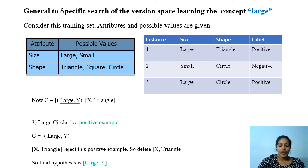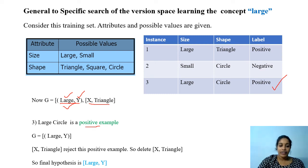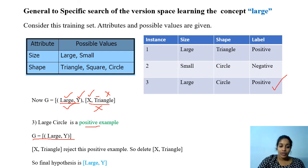Our current hypotheses are {large, y} and {x, triangle}. The next instance is a positive example, {large, circle}. For {large, y}: large matches large, circle matches y — this hypothesis accepts the positive example. For {x, triangle}: large matches x, but triangle and circle do not match — this hypothesis rejects the positive example. So we omit {x, triangle}. The final hypothesis is {large, y}, which accepts all positive instances and rejects all negative instances.